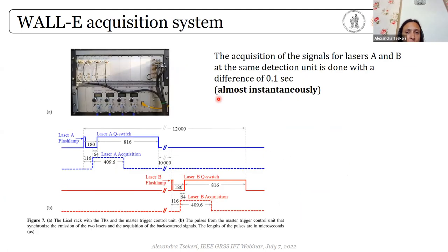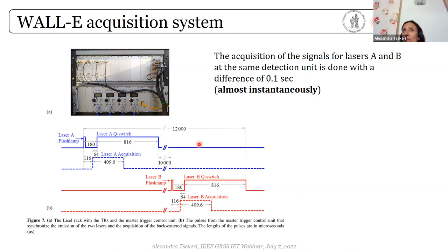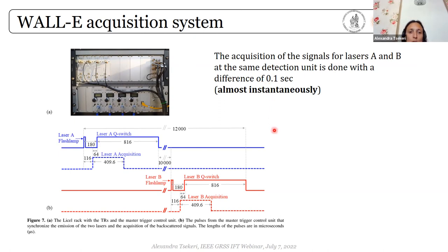Just to briefly comment on the positioning system: this enables us to measure in an interlaced way the signals from both lasers at both telescopes. The measurements between lasers A and B have a difference of 0.1 seconds — almost instantaneously for our purposes.